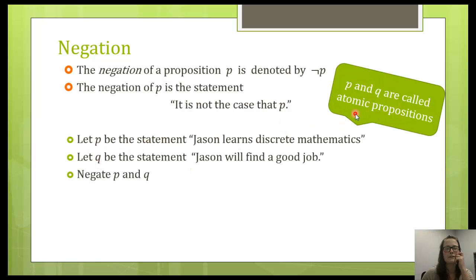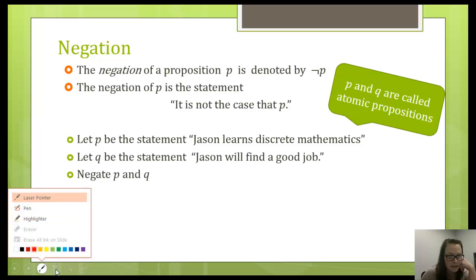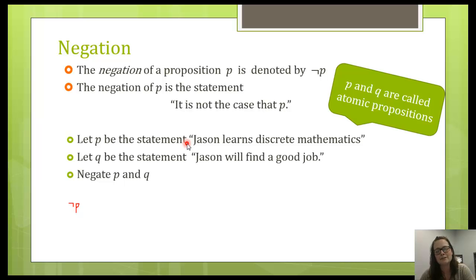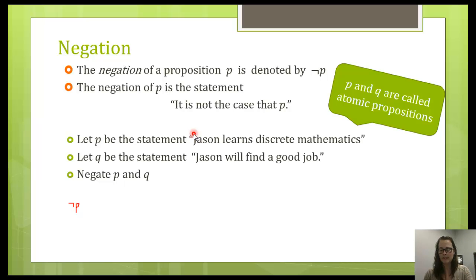I want to think about one of these and try to negate it — I want to negate P. I'll leave this up to you guys. The negation in logical form would be: 'it is not the case that Jason learns discrete mathematics.' I want you to think about how to say that a little nicer but still have the same meaning, because you have to be careful when going from symbolic form to English form — sometimes the translation can get a little mushy. Just make sure it still means the same thing. You can check by making sure it's true and false at the same moments.